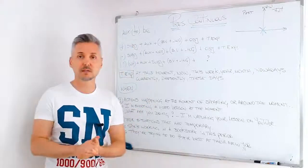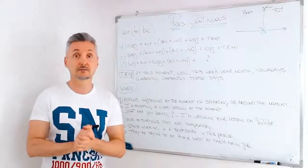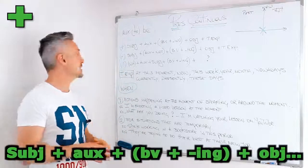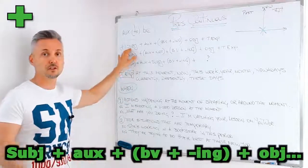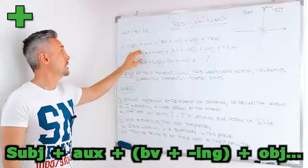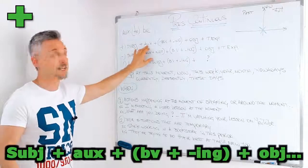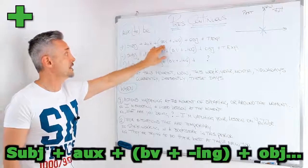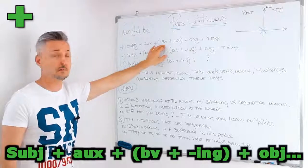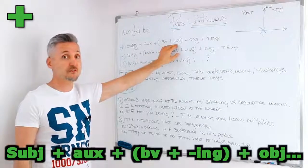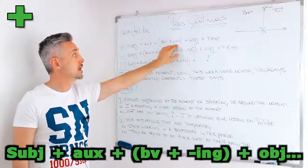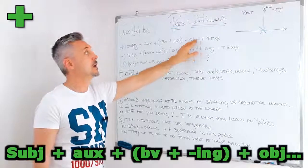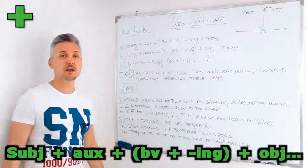Let's look at the three types of sentences first. For a positive sentence, we need the subject first, then we need the auxiliary — the verb 'to be' — then we need the base of the verb plus the -ing form, plus an object, plus a time expression.